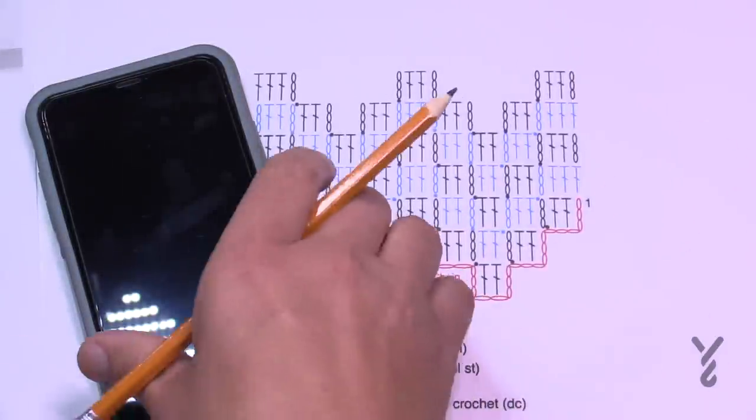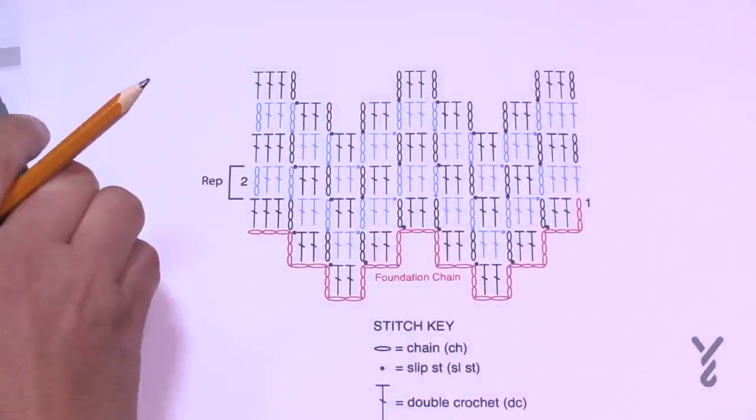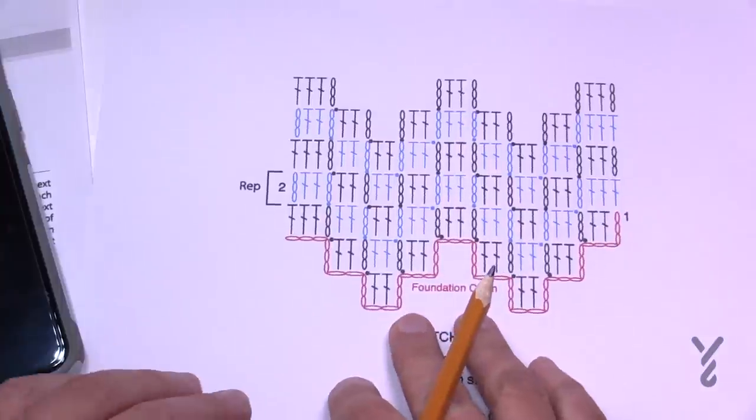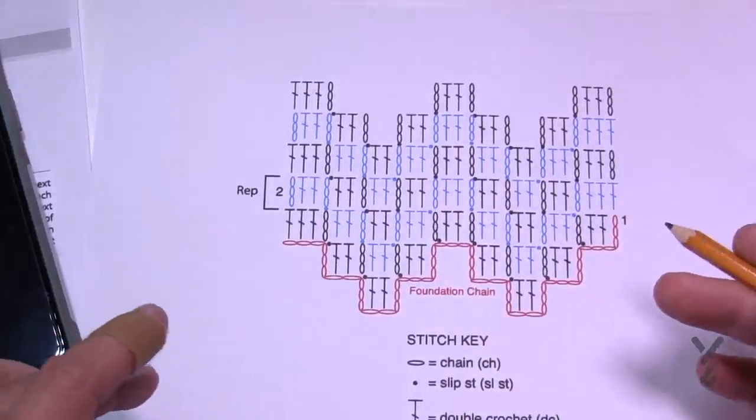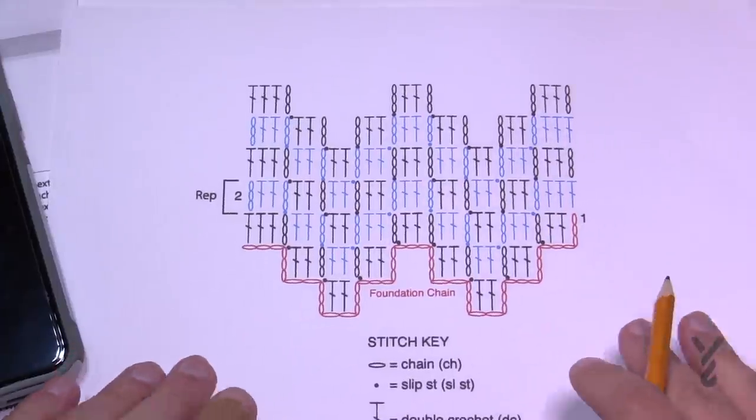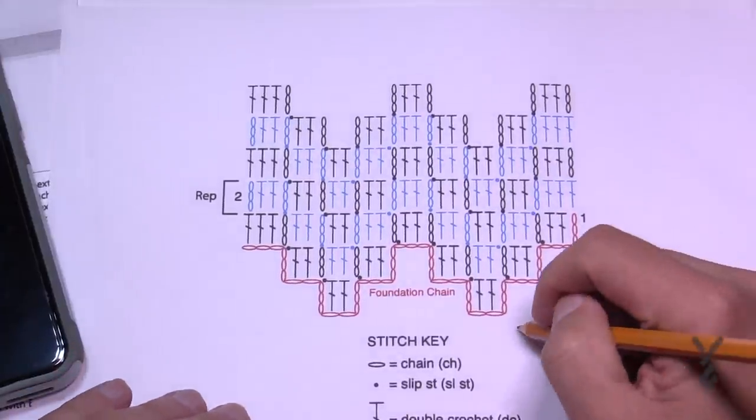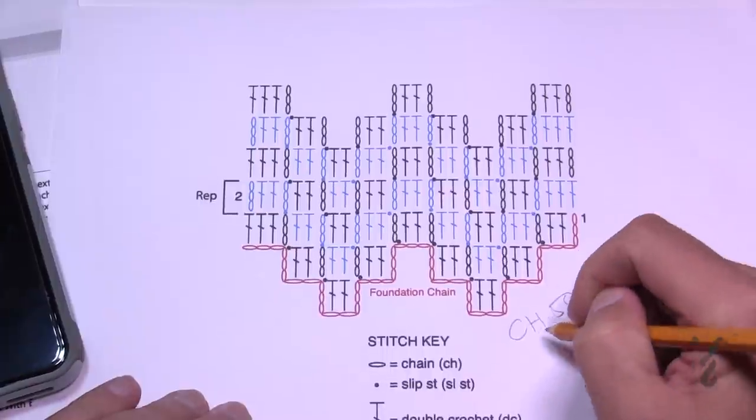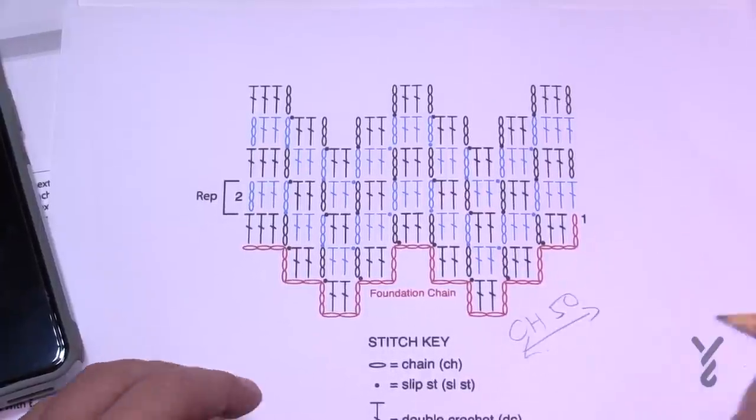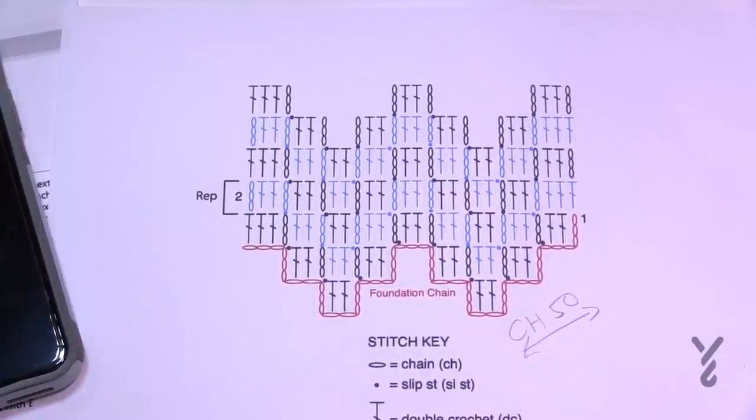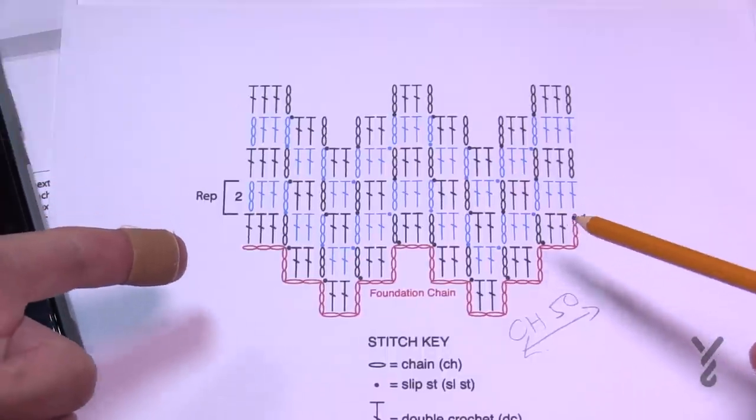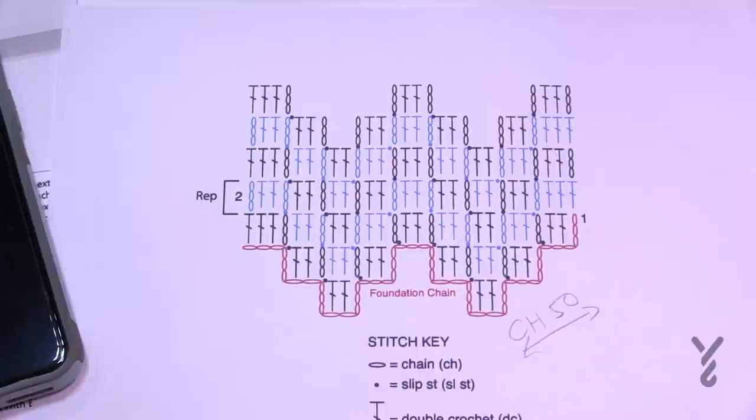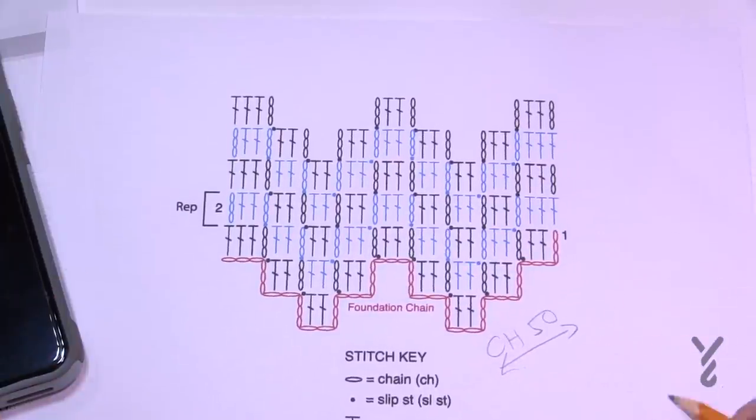So today we have a diagram, and I'm almost scared now to film this, but we're gonna try our best. The diagram is given like this, and the designer has given us limited information. We know that this is chaining of 50 because that's what the designer has us do in the pattern. Today's concept is taking an existing diagram and actually making it expand.